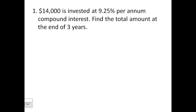Let's start with an example. $14,000 is invested at 9.25% per annum compound interest. Find the total amount at the end of three years. The per annum means annually. It could also say annually, per year, per annum. They're all the same thing. So we're going to use our formula, which says we're going to take our principal times 1 plus our interest rate to the power of however many years we have. And that will give us our total amount, which is what we're trying to find here.